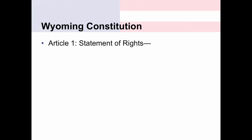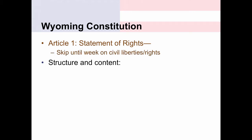Article 1 of the Wyoming Constitution has a statement of rights — something we'll revisit when we talk about civil rights and civil liberties. Like the U.S. Constitution, the Wyoming Constitution is structured according to articles, but instead of Article 1 being powers granted to Congress as in the U.S. Constitution, Article 1 in the Wyoming Constitution is a statement of rights. The main point is that the Wyoming Constitution is very similar to the U.S. Constitution.